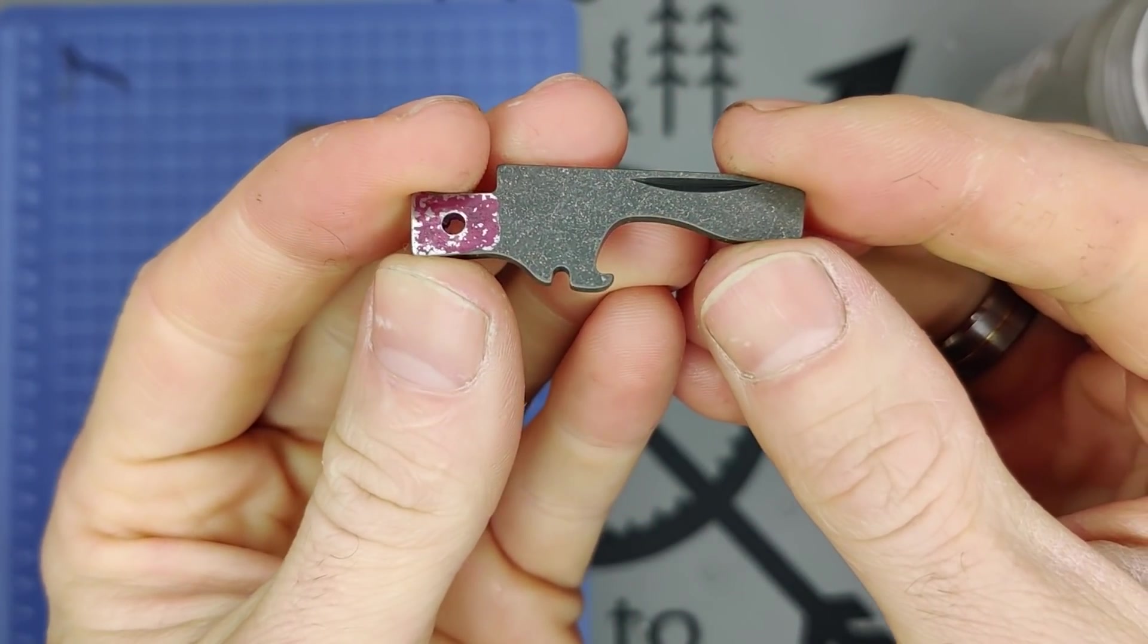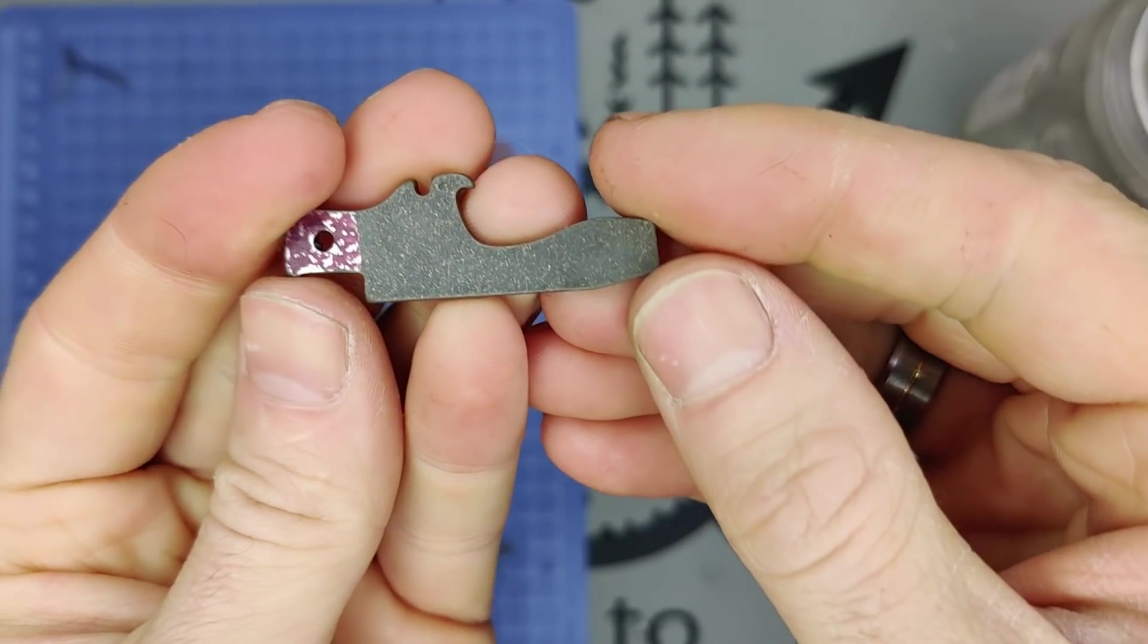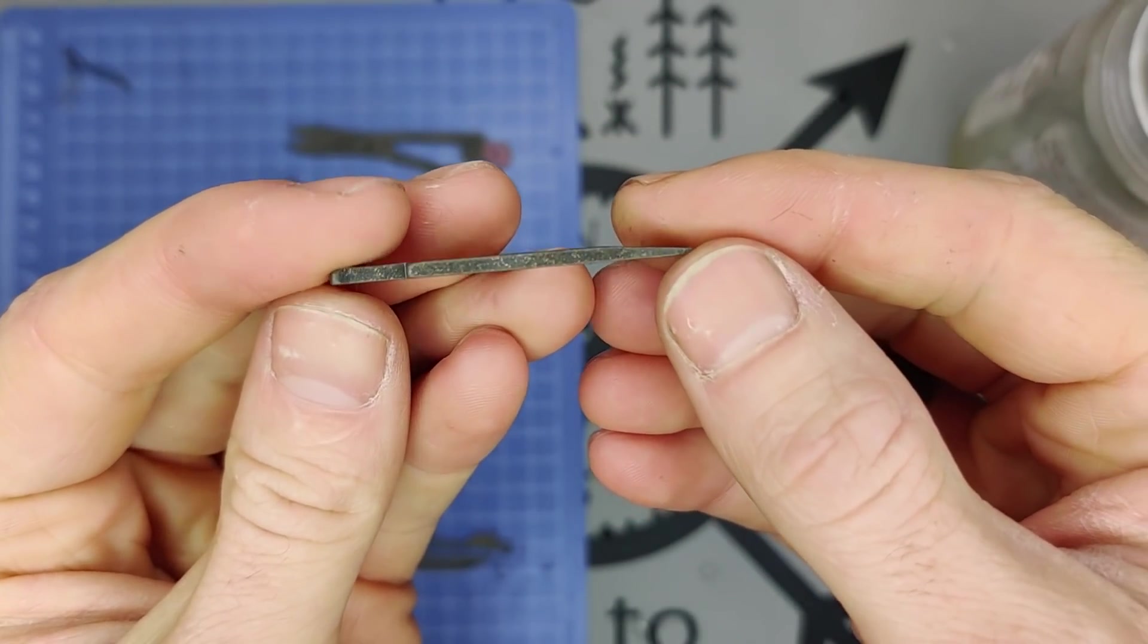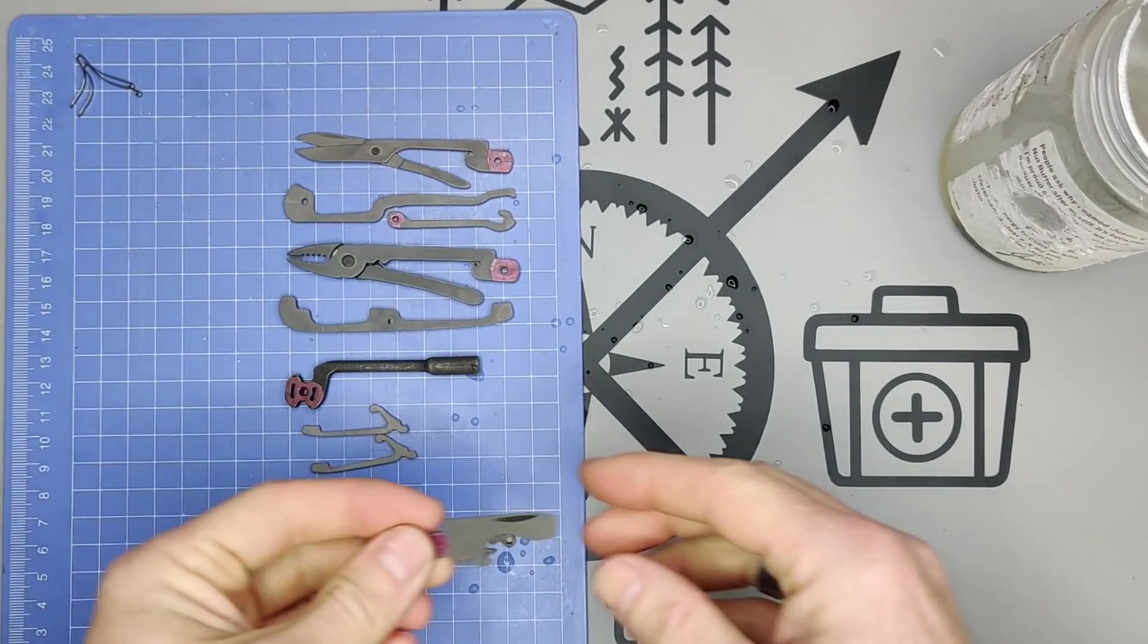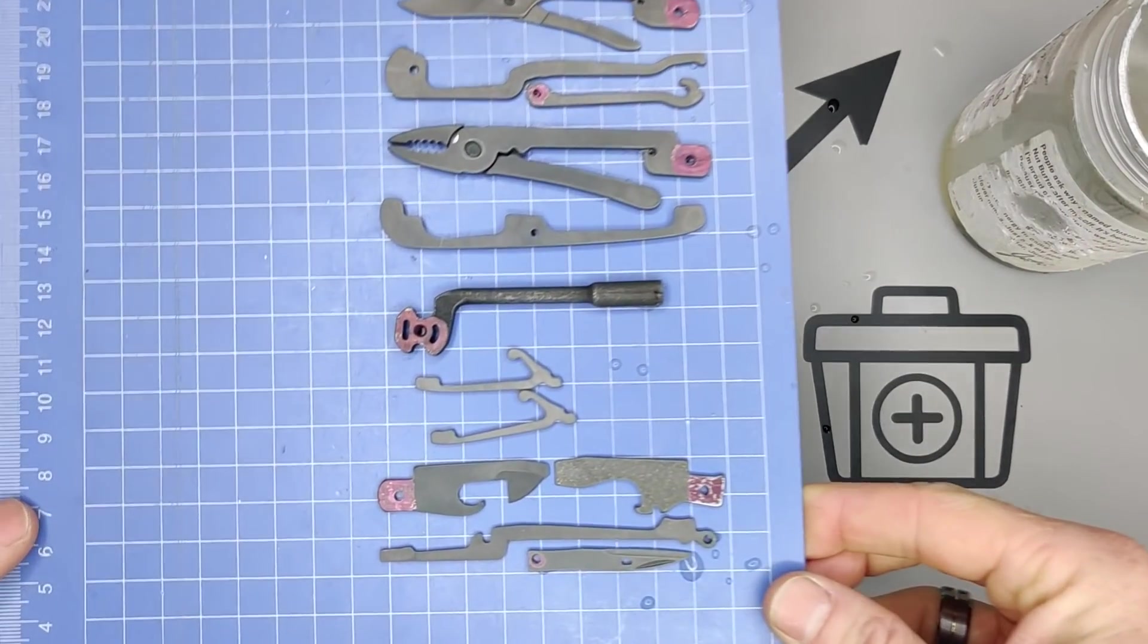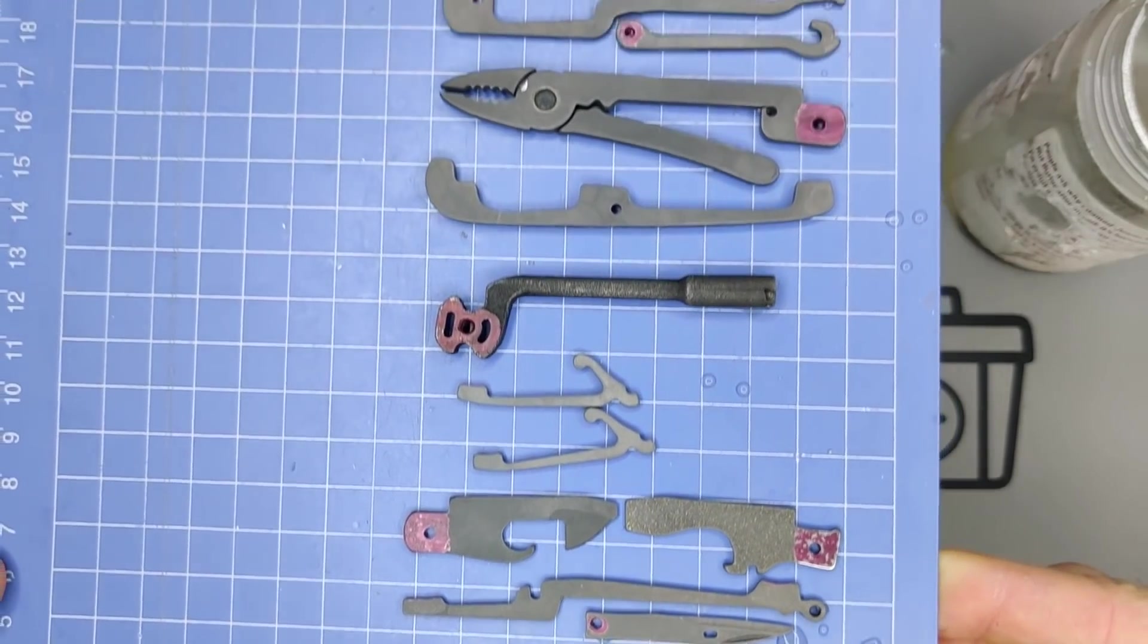All right, so you can see the brass left marks on the acid etching. Just got a little gold flakes there. All right, then we're going to do this with the rest of the tools. And then I'll come back and show you how it looks.